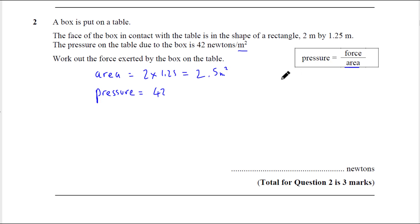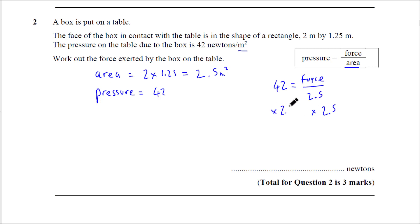So if we put that into the formula — let's get our method marks — pressure equals force divided by the area, which is 2.5. We just need to multiply both sides by 2.5 to get the force. So 42 times 2.5 equals force. You will notice this question is similar to the one that appeared in 2019. And 42 times 2.5 should be 105.